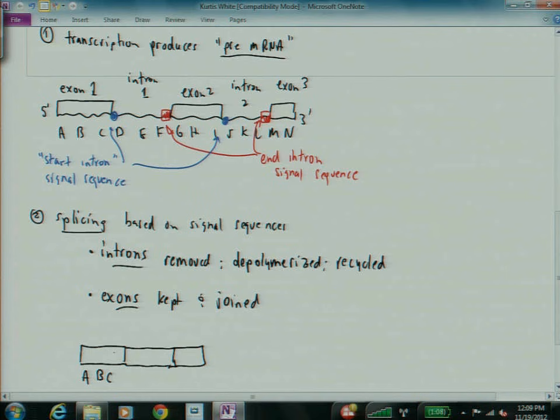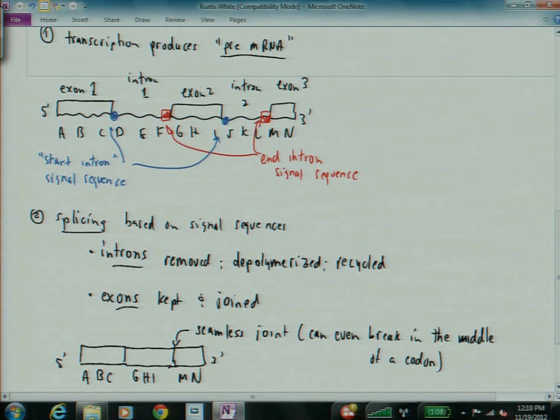And these things here, these are a seamless joint. That is, they can even break in the middle of a codon. So let me say, just to reiterate, so sequences D, E, and F, and J, K, and L, gone, removed, snipped out, depolymerized down the nucleotides, and recycled. And the other parts are joined seamlessly. So if you looked at this RNA, there would be no way to know that something had been snipped out there. Like if you look in GeneX, it's just RNA. There's no way to know that there had been an intron there. It's all been removed. And again, it can break in the middle of a codon.